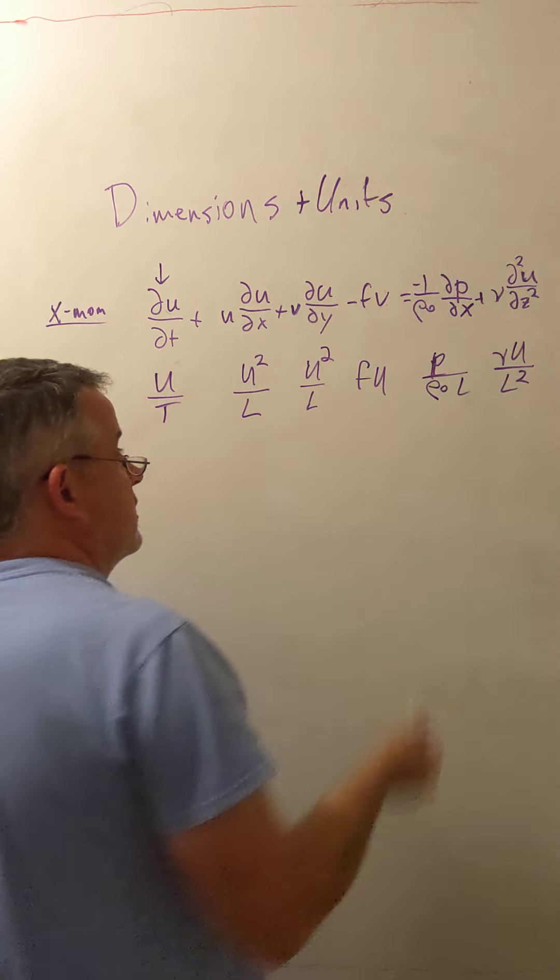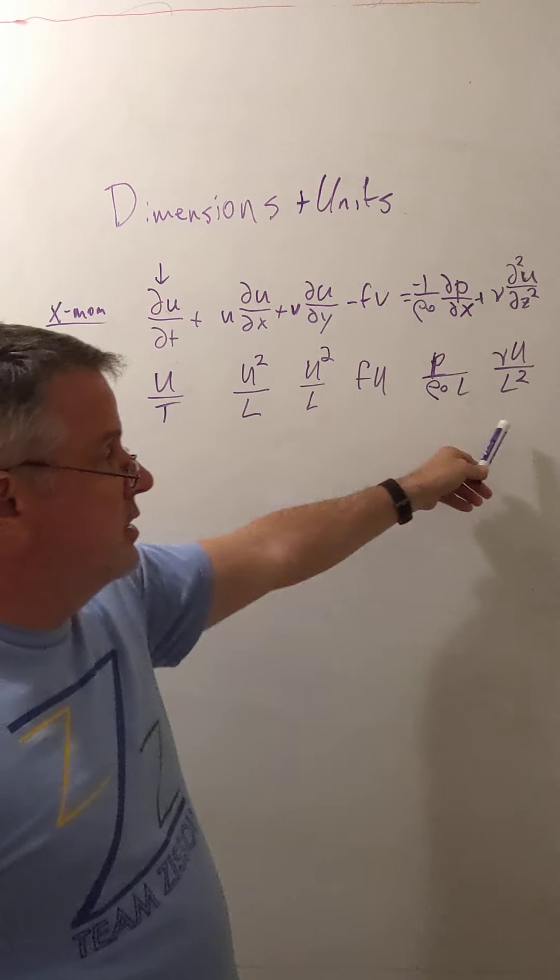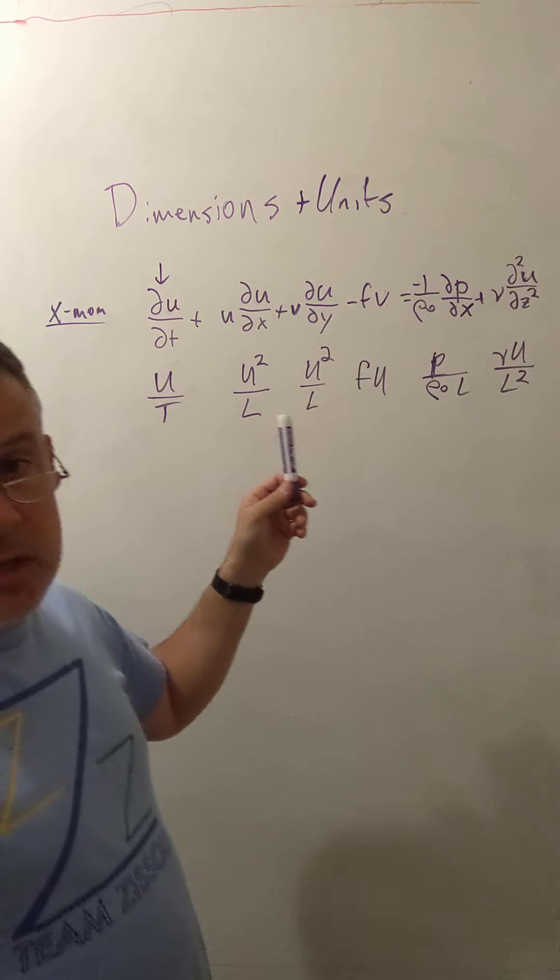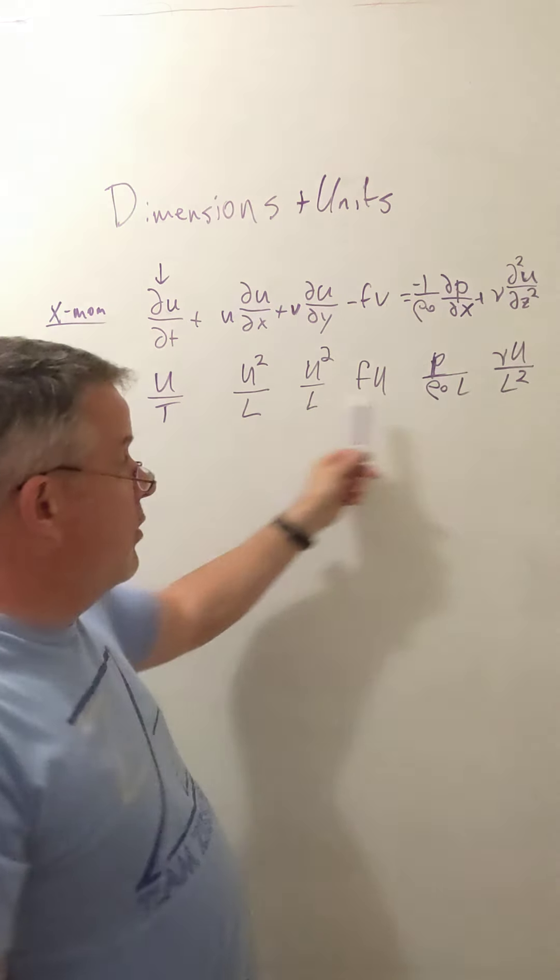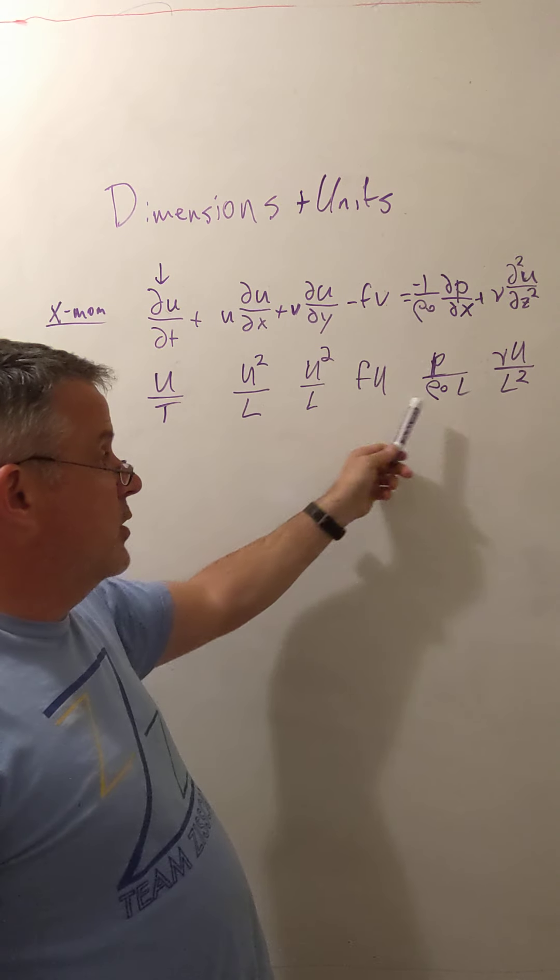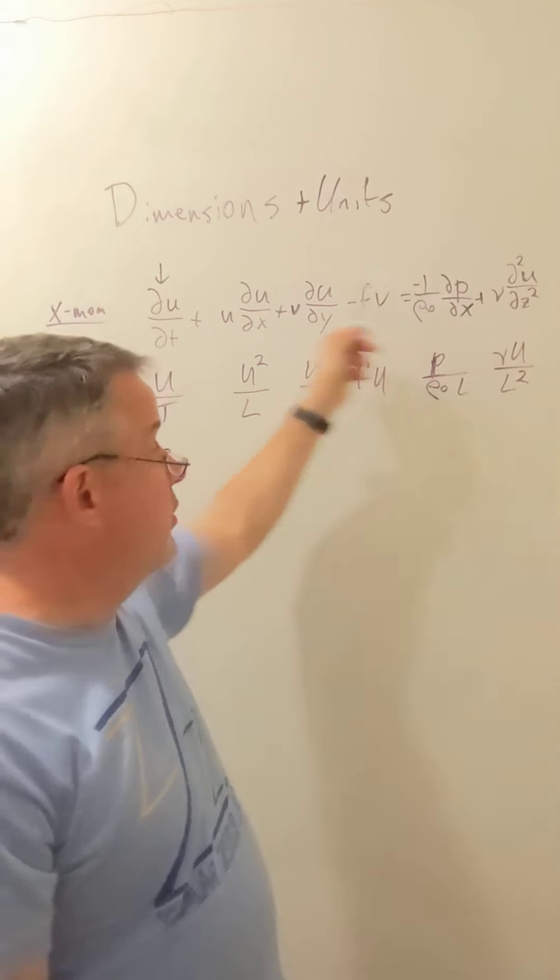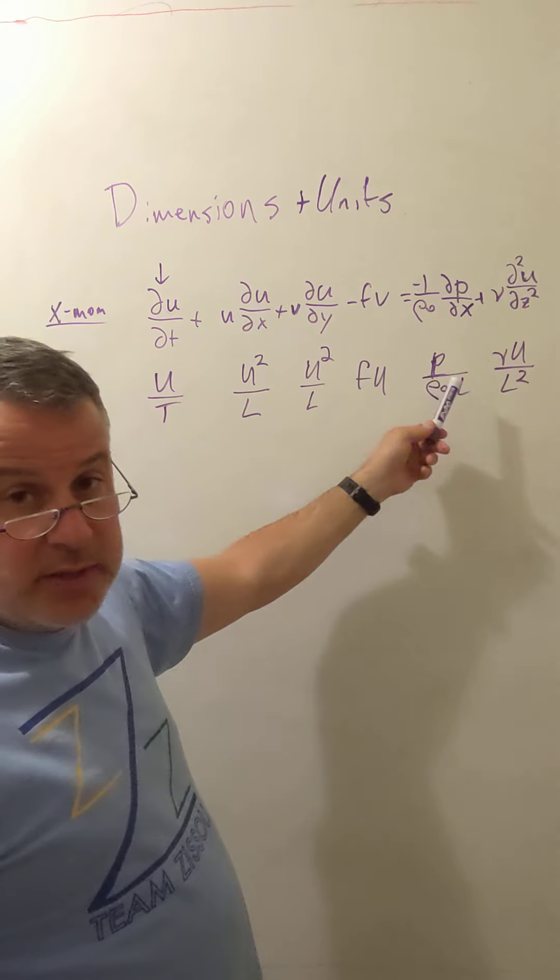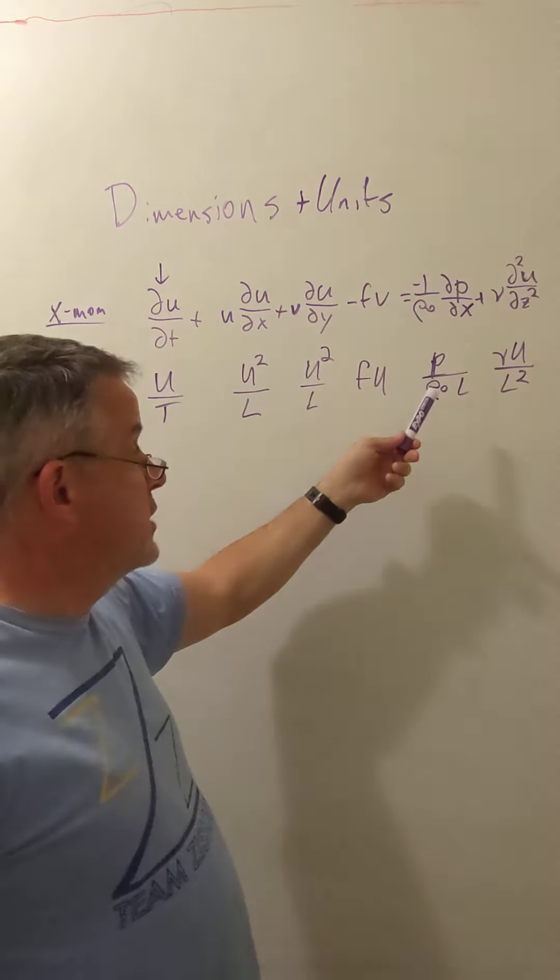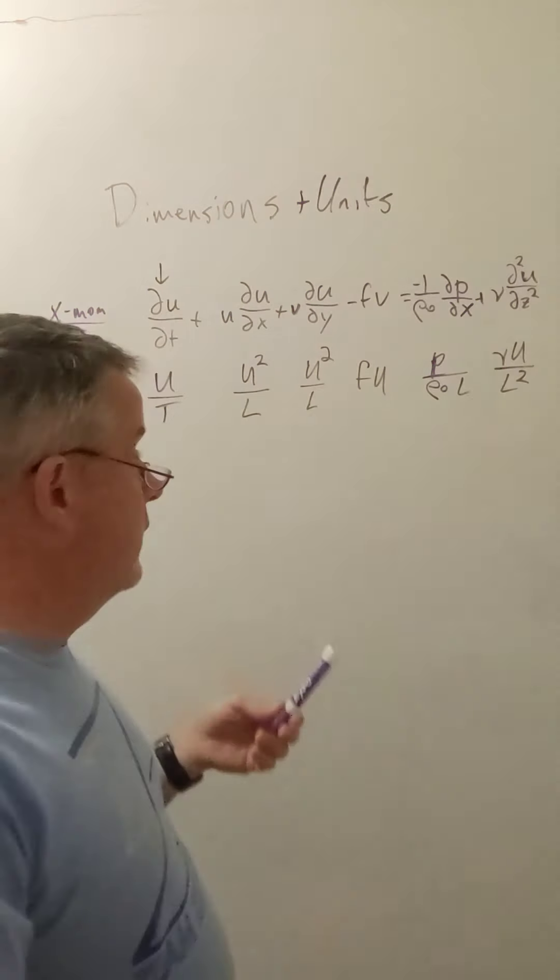And then this last one goes like the viscosity times the velocity over a length scale squared. And I don't have to worry too much about the pluses and minuses. So each of these has dimensions that go basically like this. Some of them have parameters like the Coriolis parameter, the density here, the viscosity here, that are not provided by this equation or solved for by this equation, but they're coming from some measurable property of the fluid at hand. That's the kind of thing that you might start thinking about.